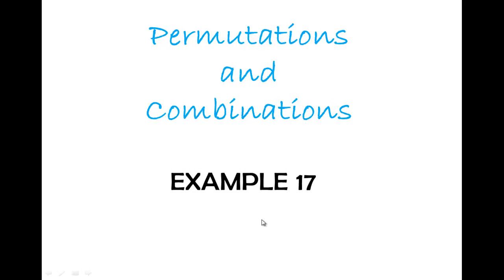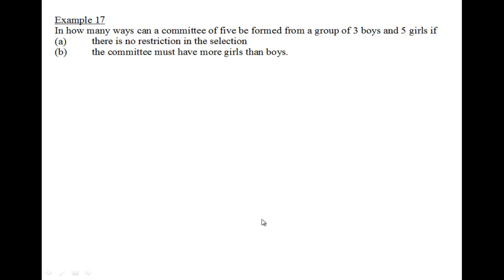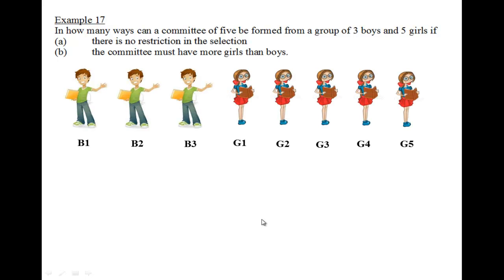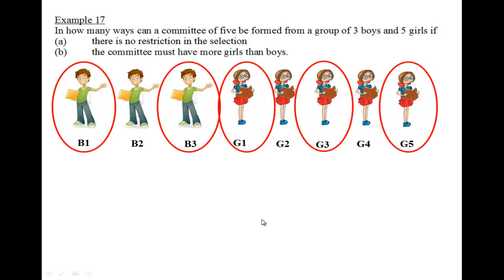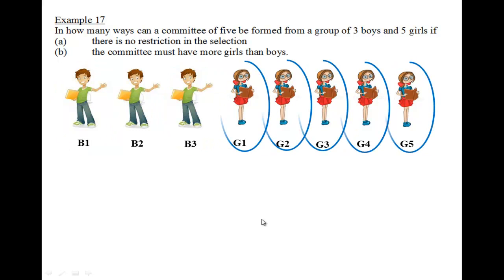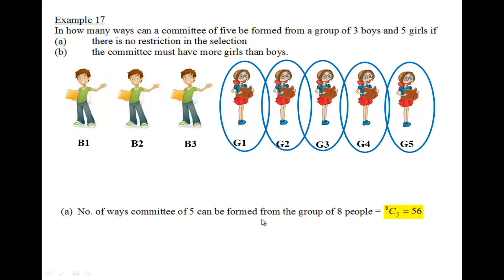Let's look at Example 17. In how many ways can a committee of five be formed from a group of three boys and five girls if there's no restriction in the selection? The main objective is to form a committee of five members amongst three boys and five girls. Essentially, I can choose any five of them - can be a mixture of boys and girls, it can also be all girls, as long as they are five of them. Therefore, the number of ways to form this committee would be 8 choose 5.